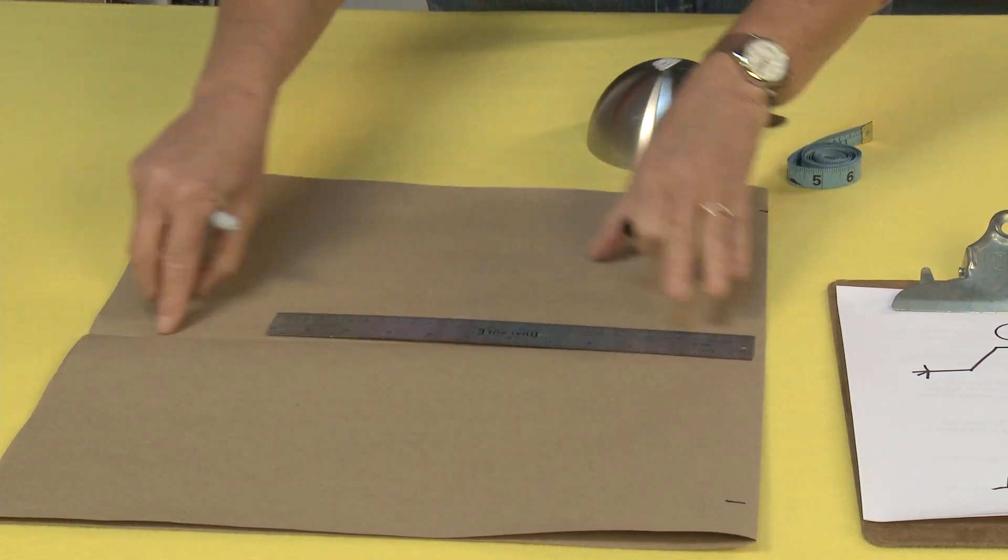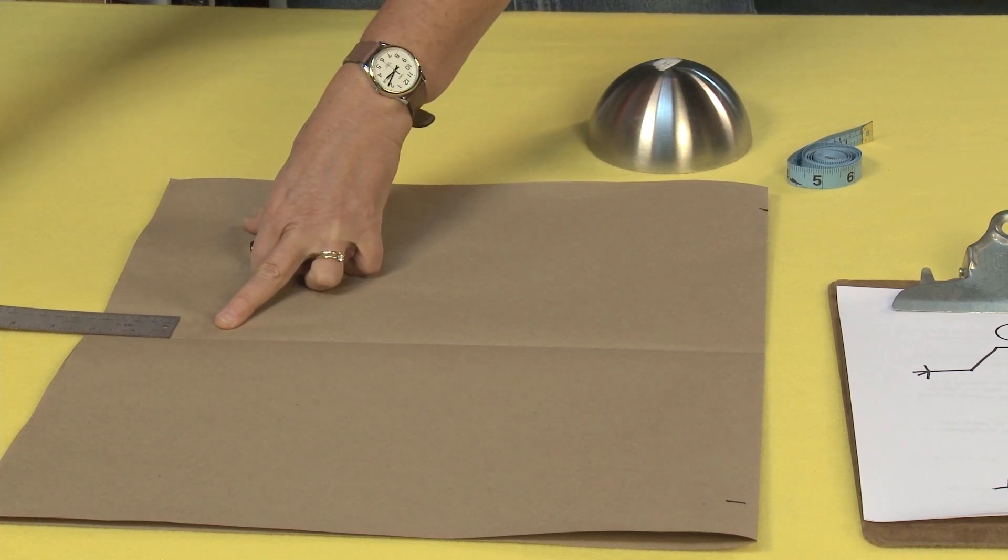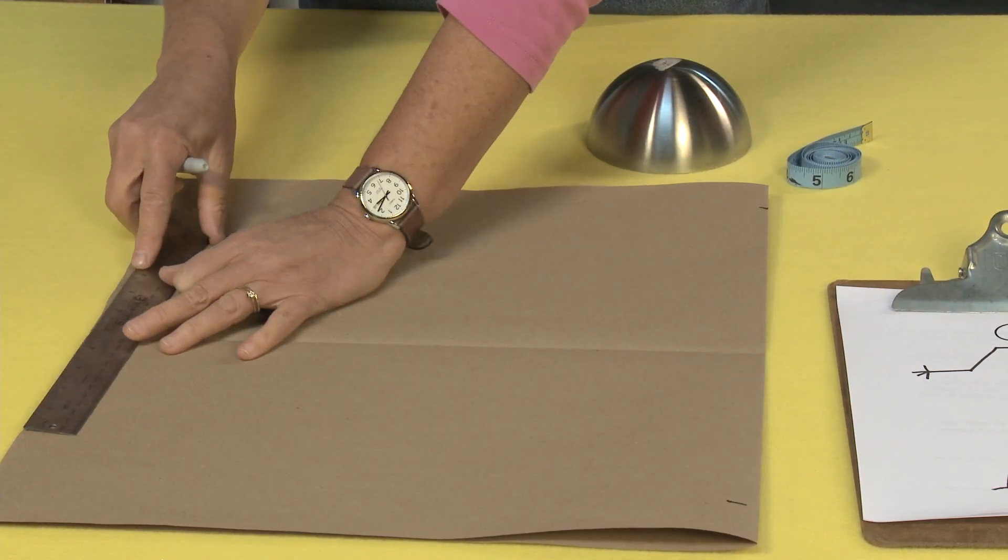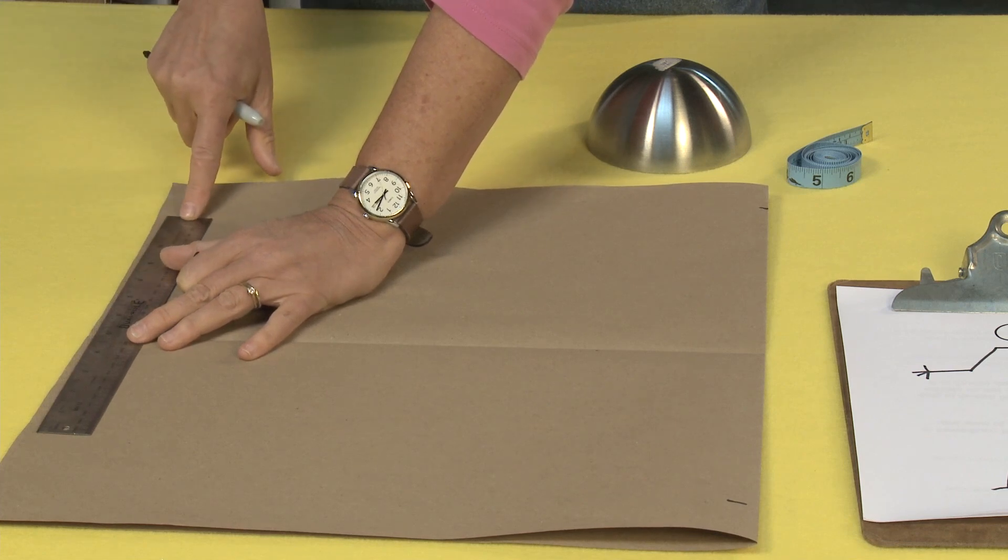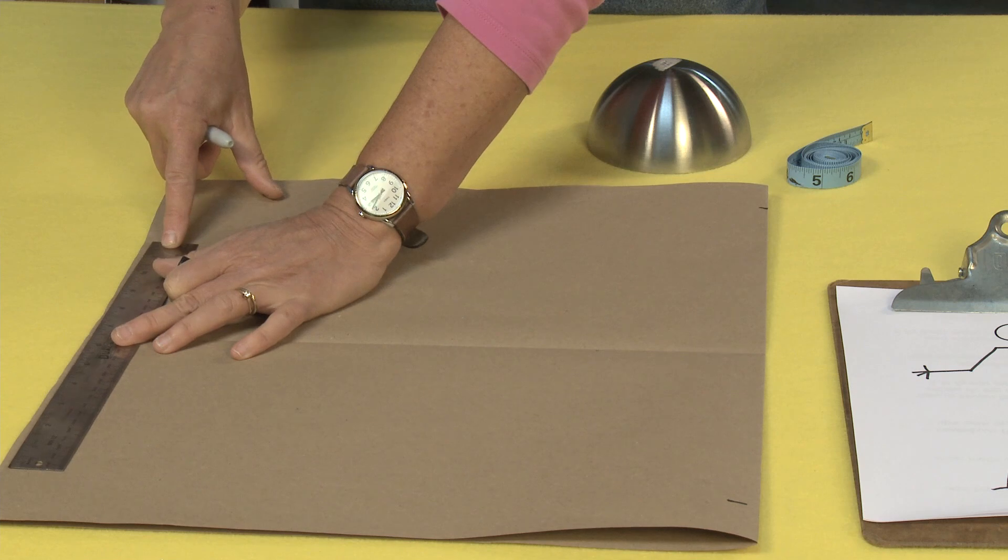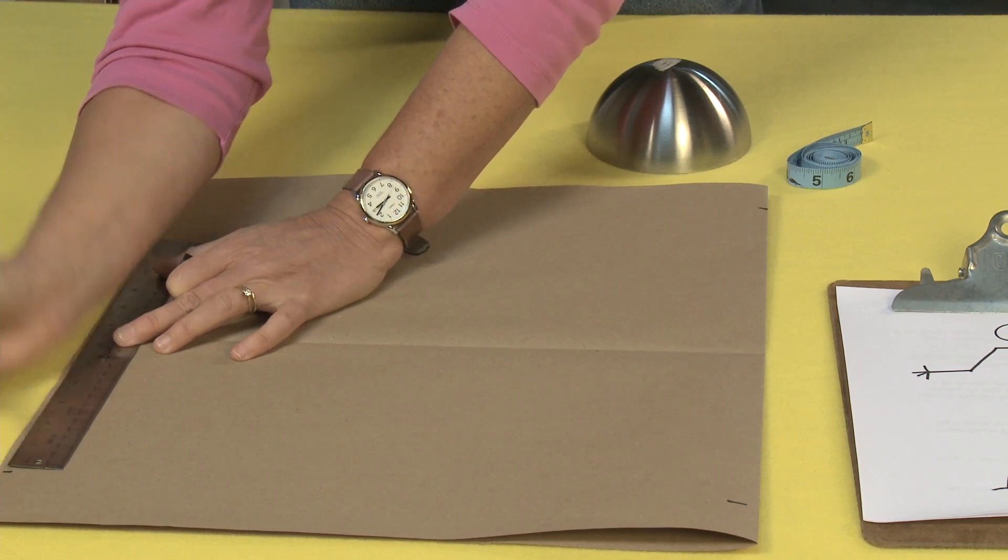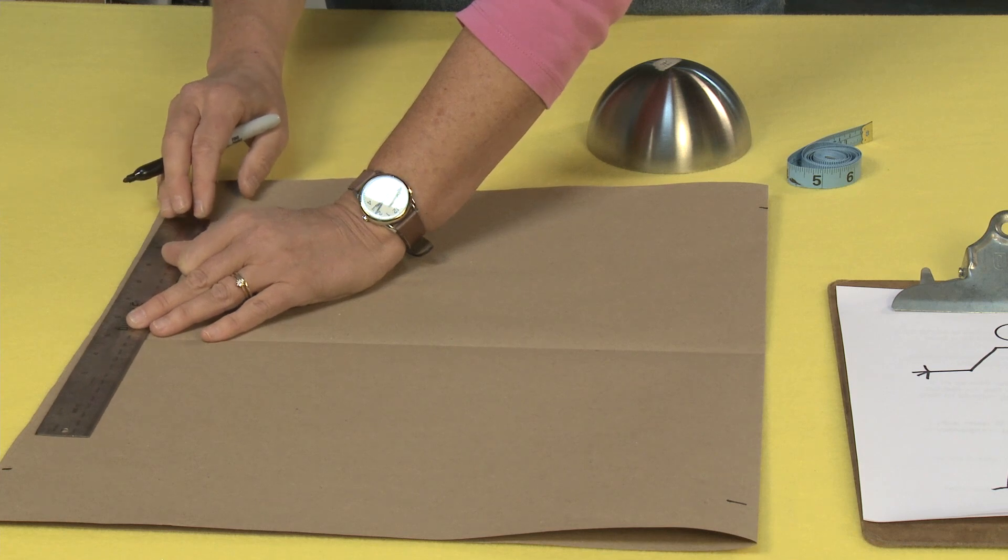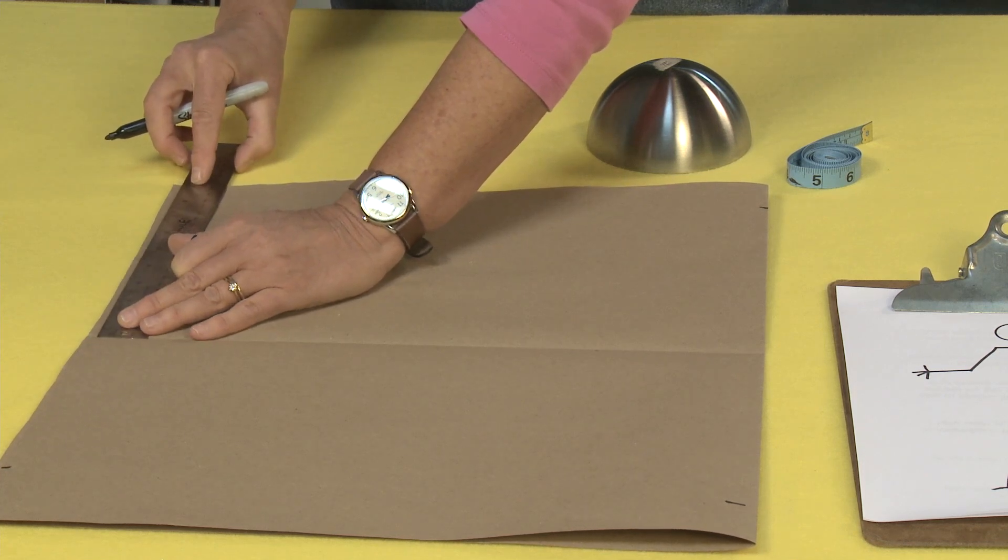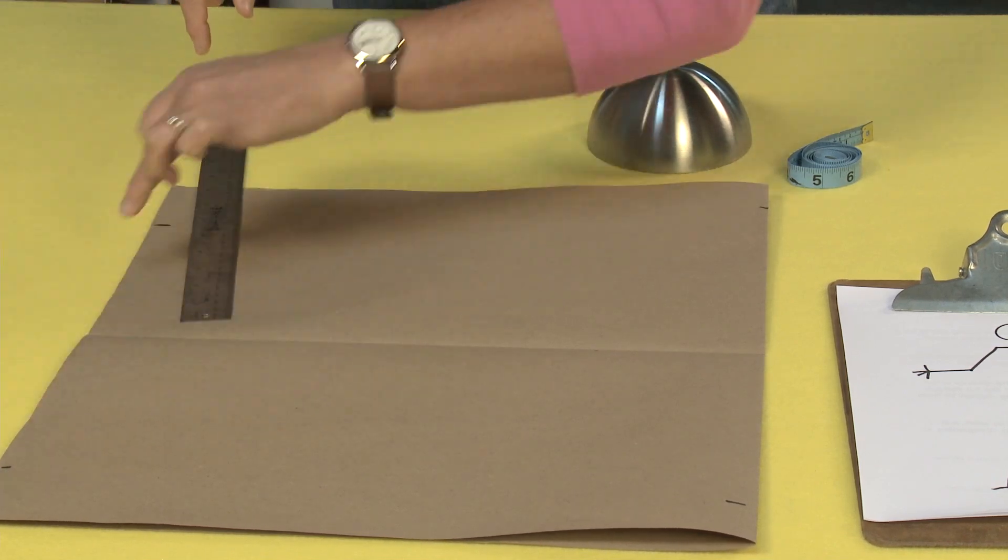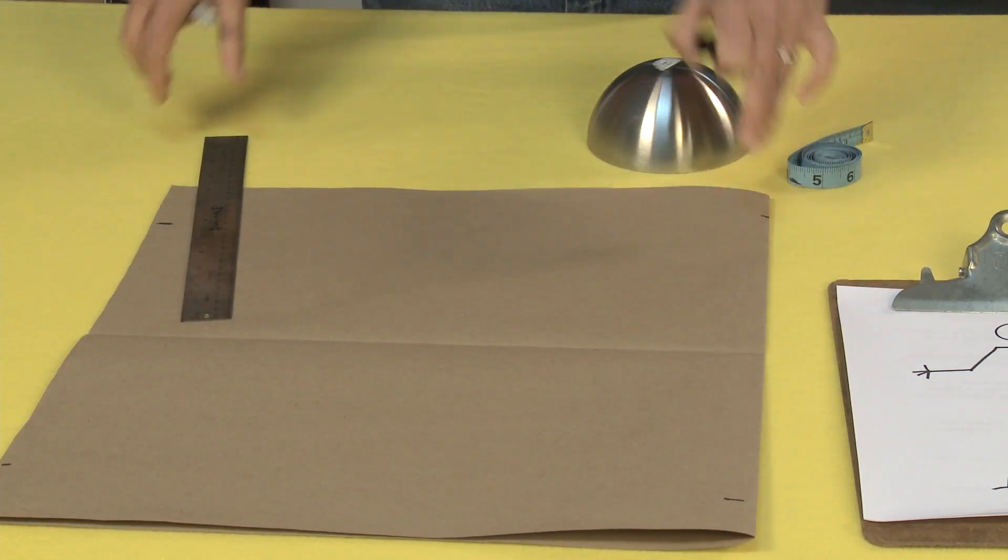And you mark that on the edges there. Then you would measure down your 16 inches which this piece is exactly 16 inches. And I want to measure 11 inches across. And again I want to add that 2 inches. So it's actually going to become 13 inches. And I mark it. And here. Mark it.